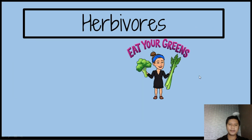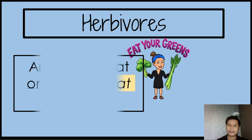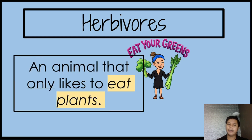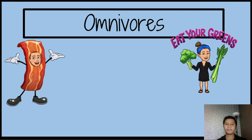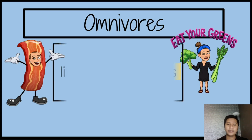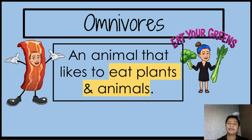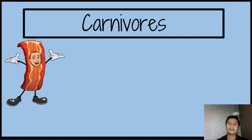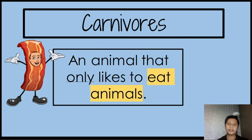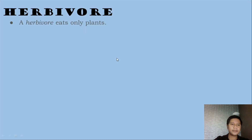So again, what are the three classifications? The first one: herbivores — they eat plants. Next: omnivores — they eat plants and animals. And then carnivores — they like to eat other animals or meat.